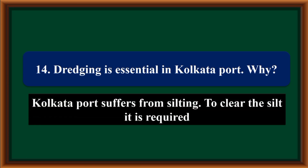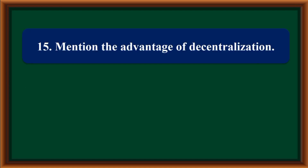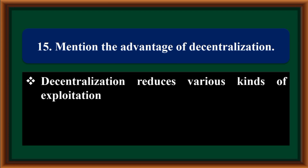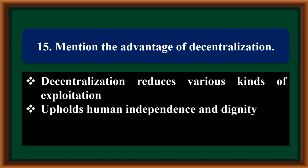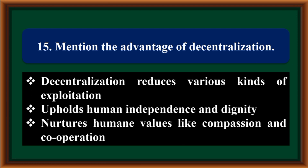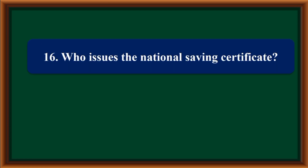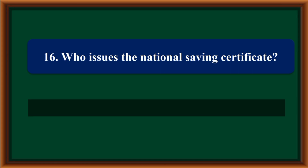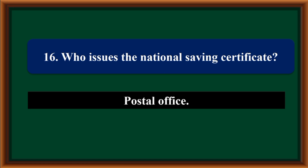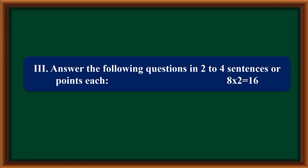Why is dredging essential in Kolkata port? Kolkata port suffers from silting; to clear the silt, dredging is required. Mention the advantages of decentralization: Decentralization reduces various kinds of exploitation, upholds human independence and dignity, and nurtures human values like compassion and cooperation. Who issues the National Savings Certificate? The Post Office.